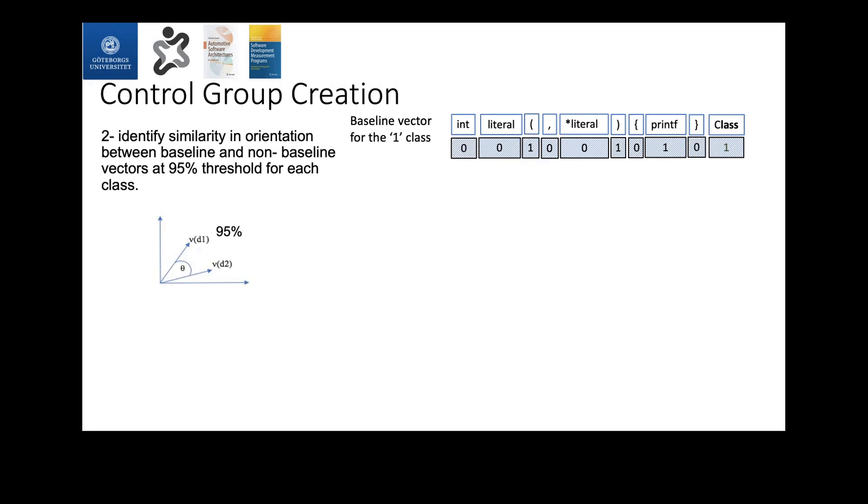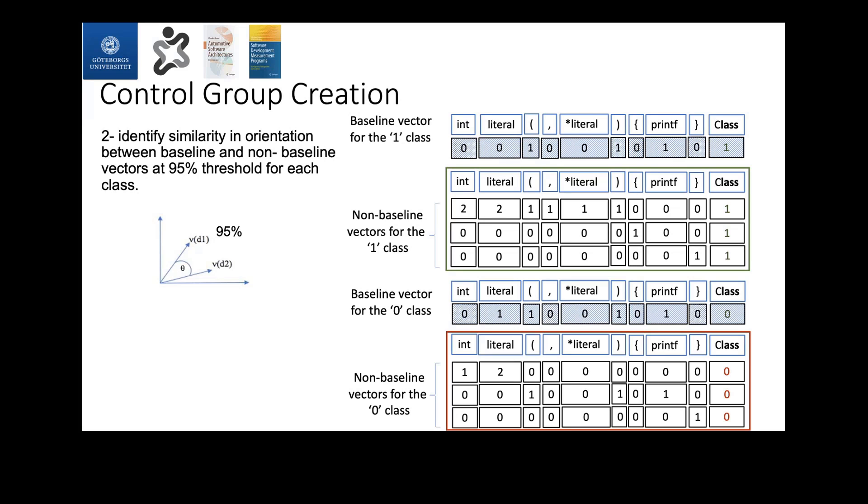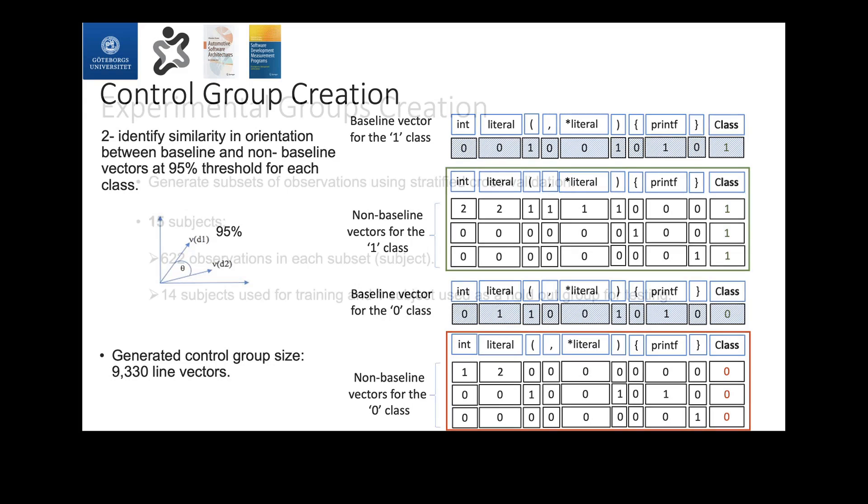The next step, we compared this baseline vector with the remaining vectors in each class. For the baseline vector that was selected from the pass class or from the one class, we compared that for a similarity in orientation with the remaining vectors using cosine similarity. Using some trial and error approach, we selected 95 percent as a threshold for similarity in orientation because when we tested the performance using this threshold for a predictor, it yielded almost 100 percent for all the four dependent variables we have. We ended up at the end with a control group of size 9,330 line vectors.